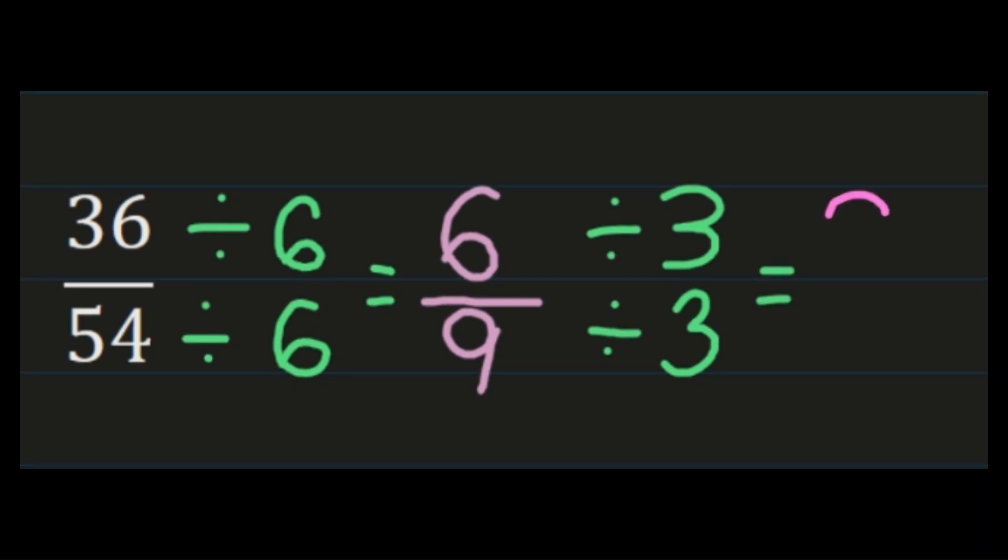So I have six divided by three is two, and nine divided by three is three. So again, I need to stop and ask myself that same question now that I have two-thirds. Is my answer simplified? Well, two and three don't share any common factors. So I am done. Thirty-six fifty-fourths simplifies to two-thirds.